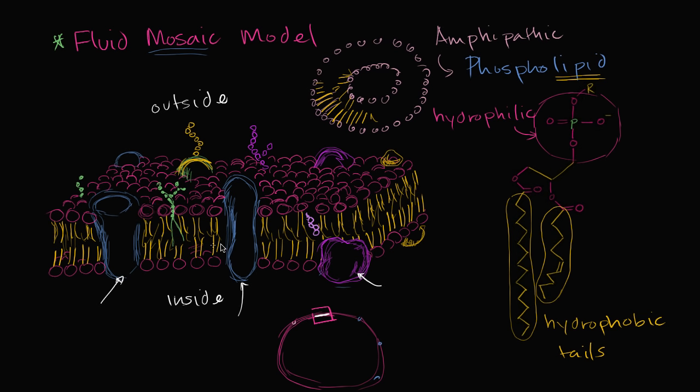You have proteins like this that go across the membrane. We call these transmembrane proteins. They're a special class of integral proteins. You have integral proteins like this that might only interact with one part of the bilayer while these go across it.